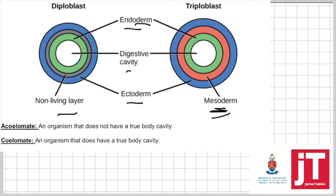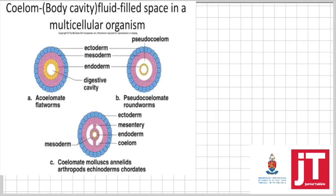Now an acoelomate organism — again, A stands for absence. This is an organism that does not have a true body cavity. And then a coelomate is an organism that does have a true body cavity. The coelom is a true body cavity. As you can see in these pictures, this is an organism that has a true body cavity. The true body cavity allows for protection of internal organs and allows the body wall and the digestive wall to move independently from each other. Also, the coelomic fluid will act as a hydrostatic skeleton in certain organisms. So the coelom is very, very important in organisms.